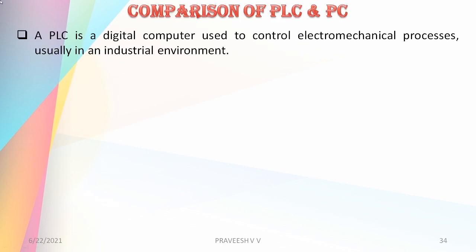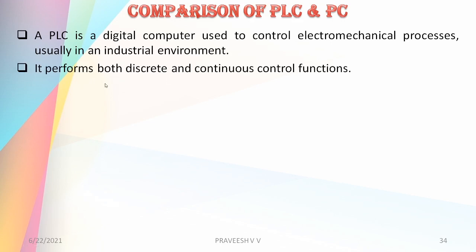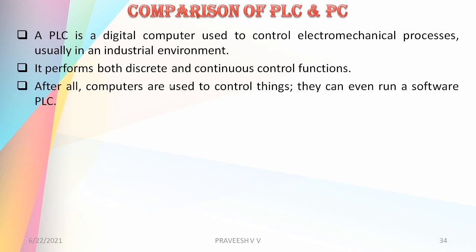Now we will compare between PLC and PC — PLC and personal computer. A PLC is a digital computer used to control electromechanical processes, usually in an industrial environment. It performs both discrete and continuous control functions. Generally, sequence and logic control are used in PLCs.